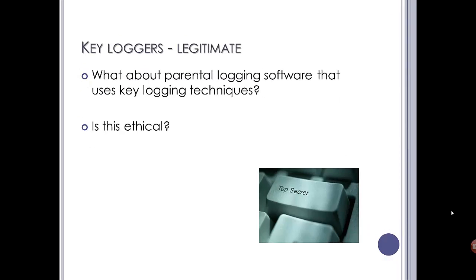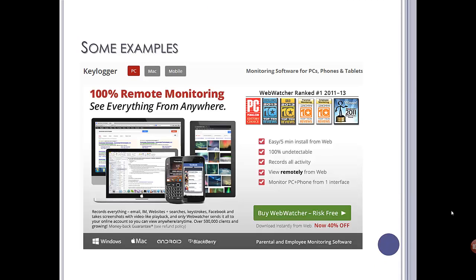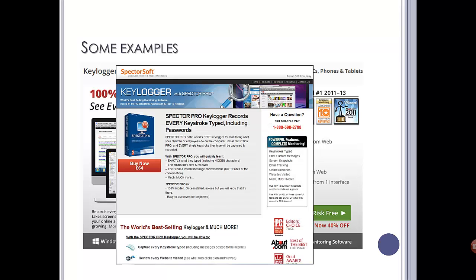How about parental logging — is that ethical? What about if parents are logging what their children are doing on their computer? There are lots of these tools available. A quick look online brought up a few. You'll notice that some can even install on phones, so you can monitor from your phone. There's one from Spectre Software — Spectre Pro Keylogger. These were literally the first two that appeared.